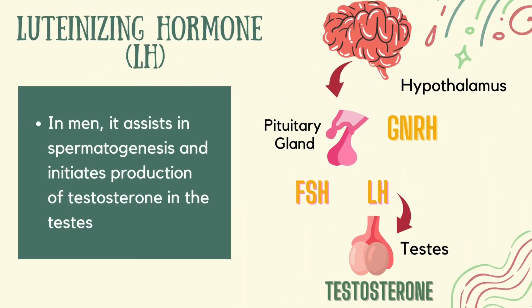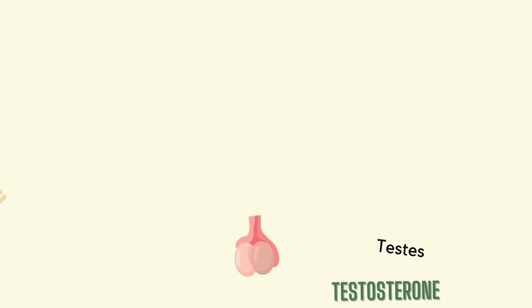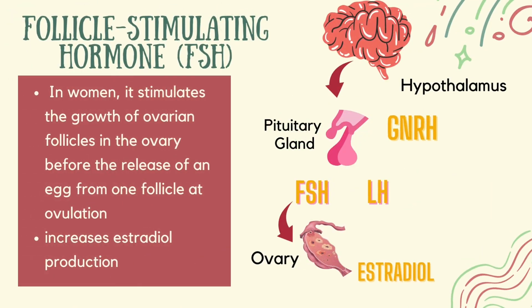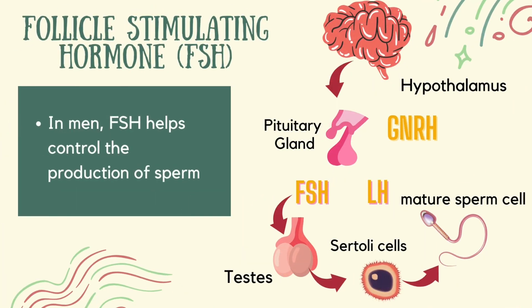In men, luteinizing hormone assists in spermatogenesis and production of testosterone in the testes. Another one is the follicle-stimulating hormone, or FSH. In women, it stimulates the growth of ovarian follicles in the ovary before the release of an egg from one follicle at ovulation. It also increases estradiol production. In men, FSH helps control the production of sperm.